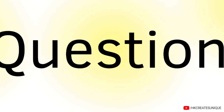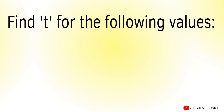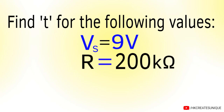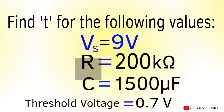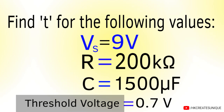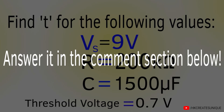Now here is a question for you. Find t for the following values: voltage source is 9 volts, resistance is 200 kilo-ohms, capacitance is 1500 microfarads, and threshold voltage is 0.7 volts. Answer it in the comment section below.